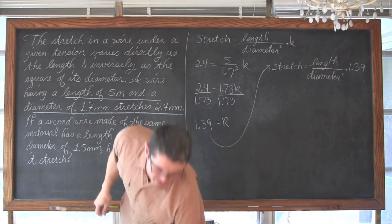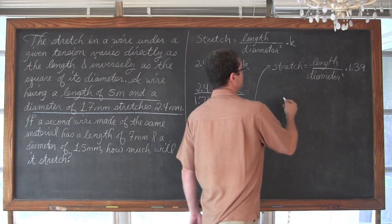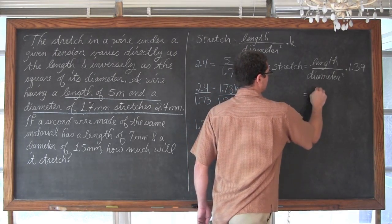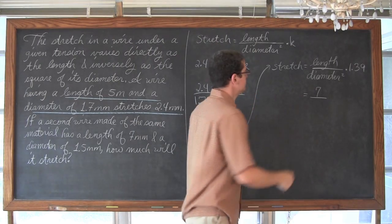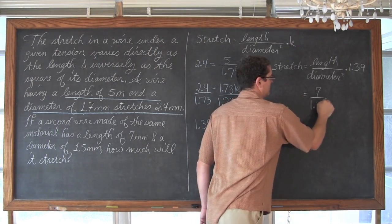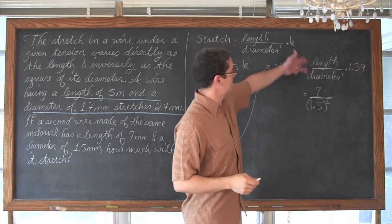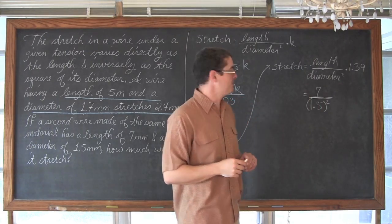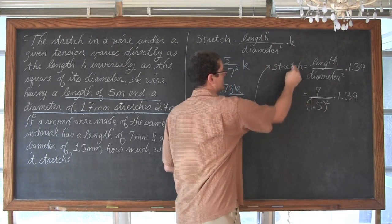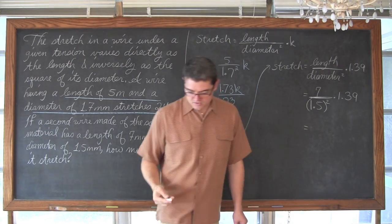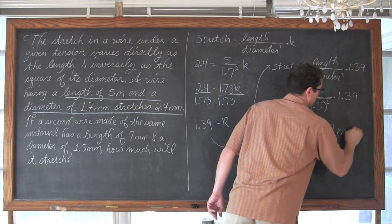Now that we have the constant, we can write our actual equation: stretch equals 1.39 times length over diameter squared. The rest of the problem says if a second wire made of the same material has a length of 7 and a diameter of 1.5 millimeters, how much will it stretch? We have length of 7, diameter of 1.5 squared, times 1.39 — that gives us a stretch equal to approximately 6.49 millimeters.